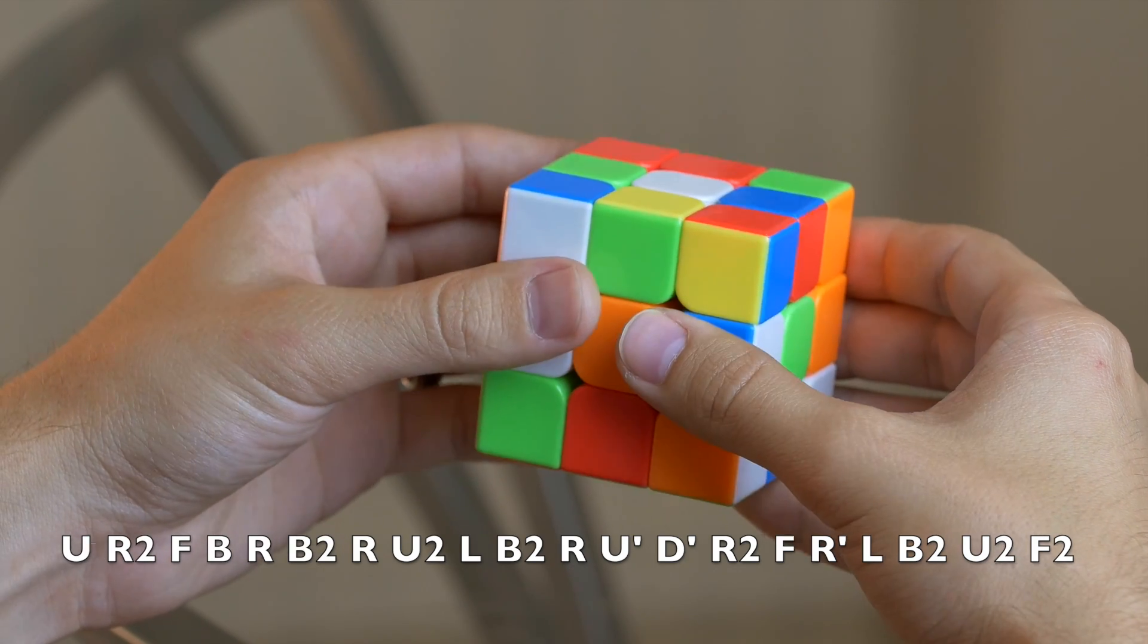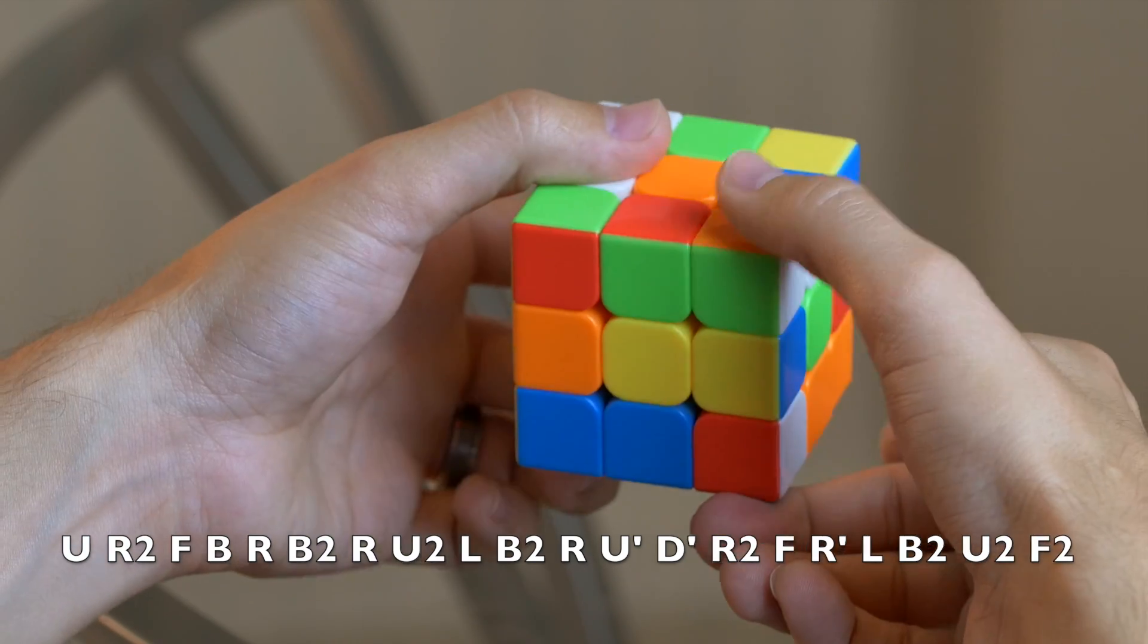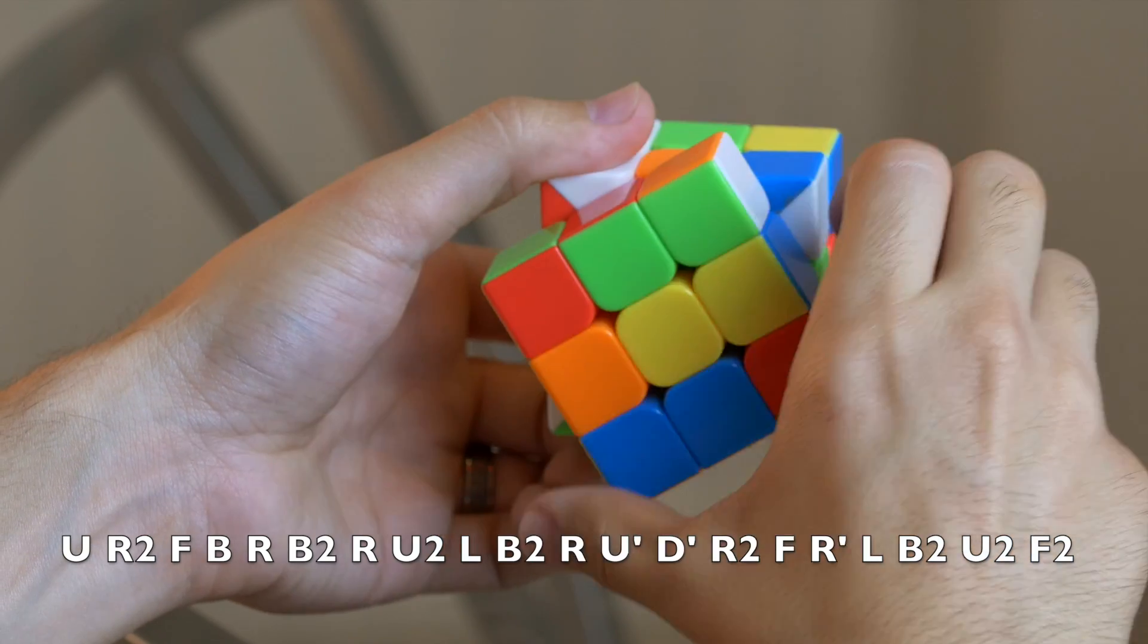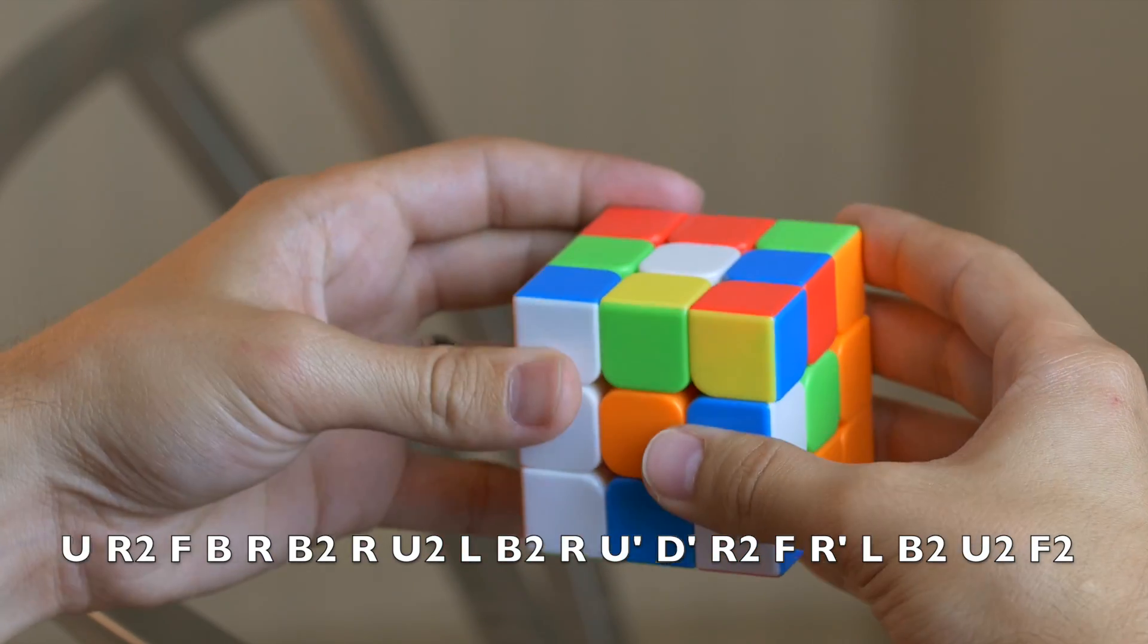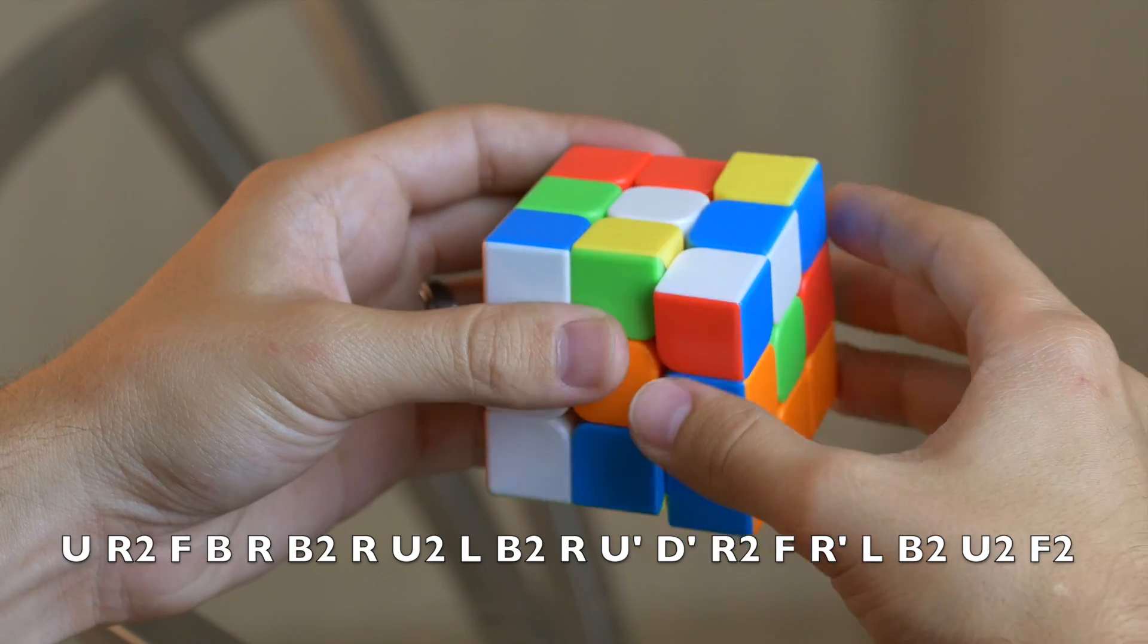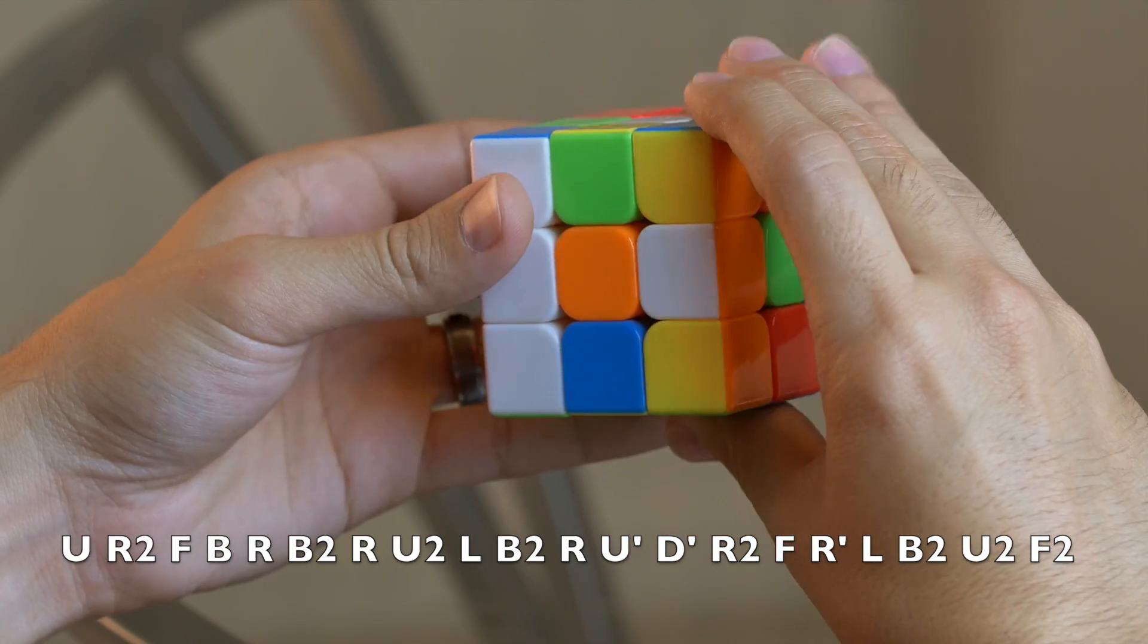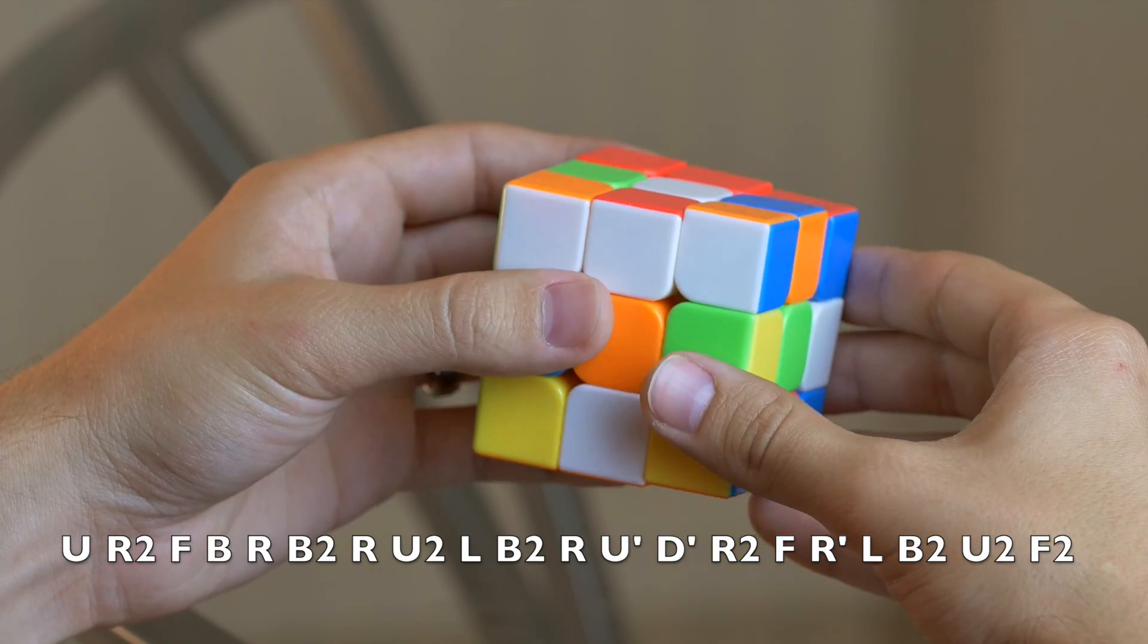And then front two times. And as you can see with this flip design, down prime, same thing as if we're looking at the downside, down prime would be counterclockwise like that. Right two times, front, right prime.